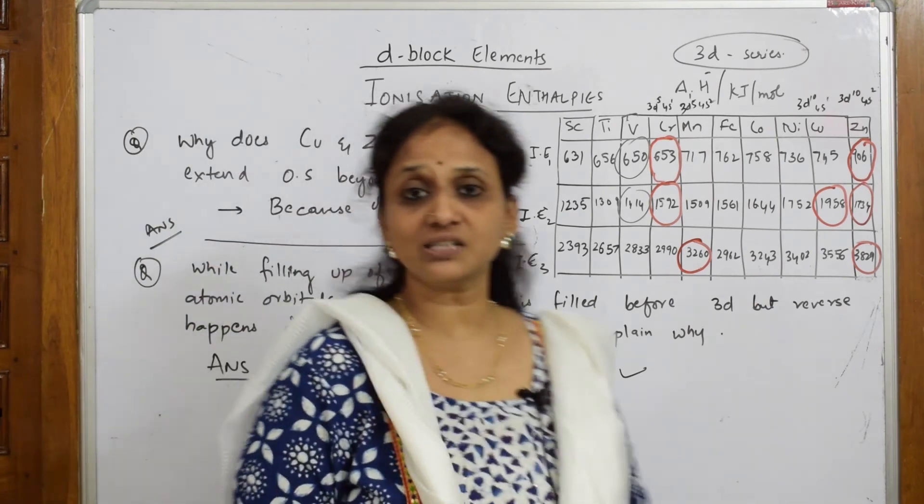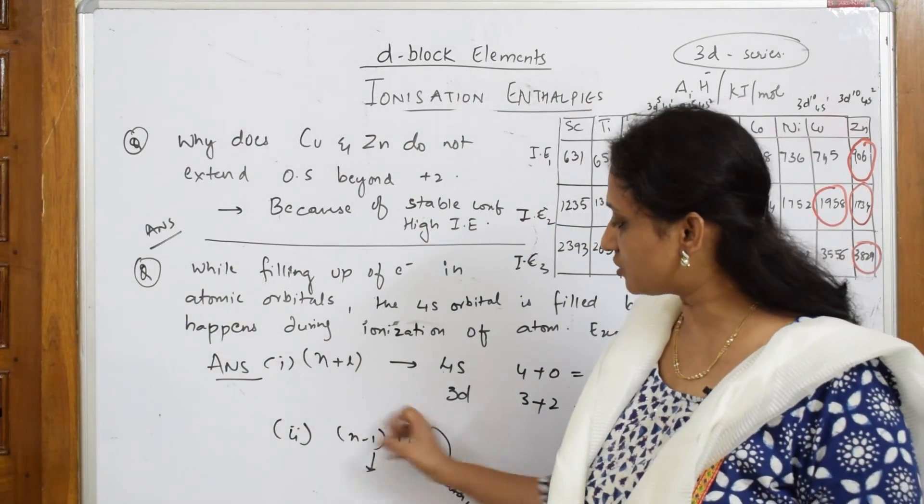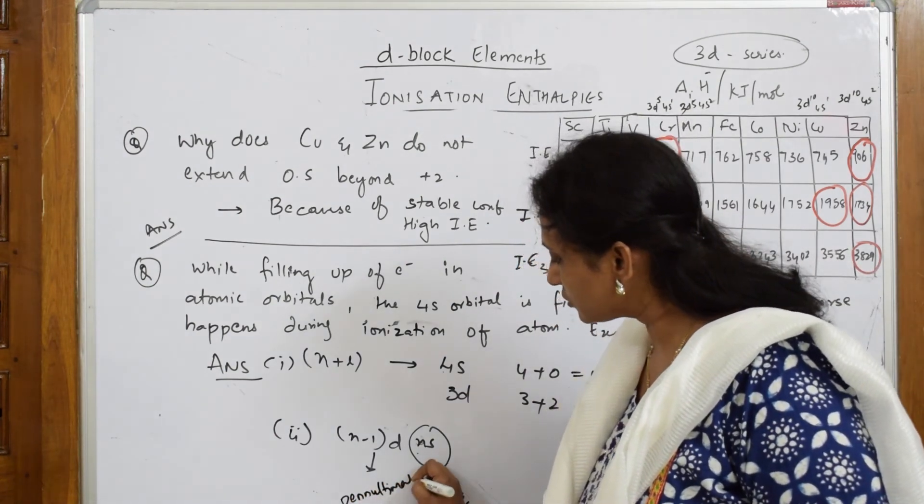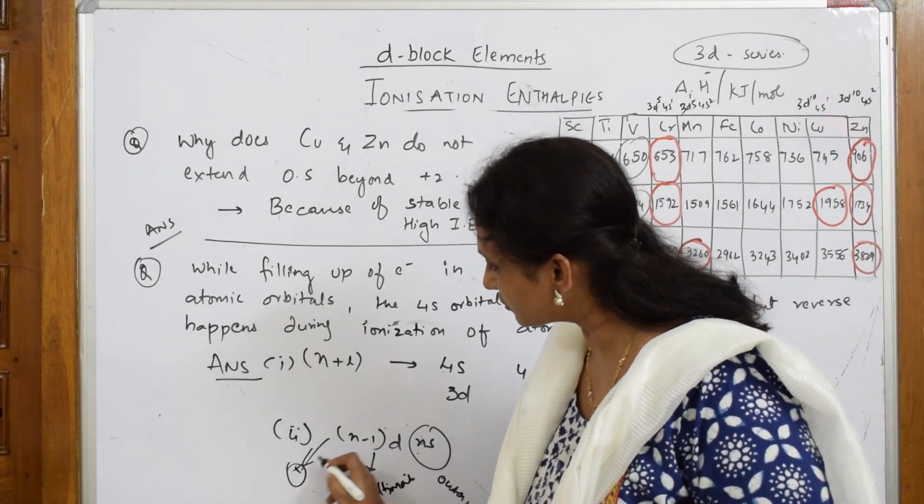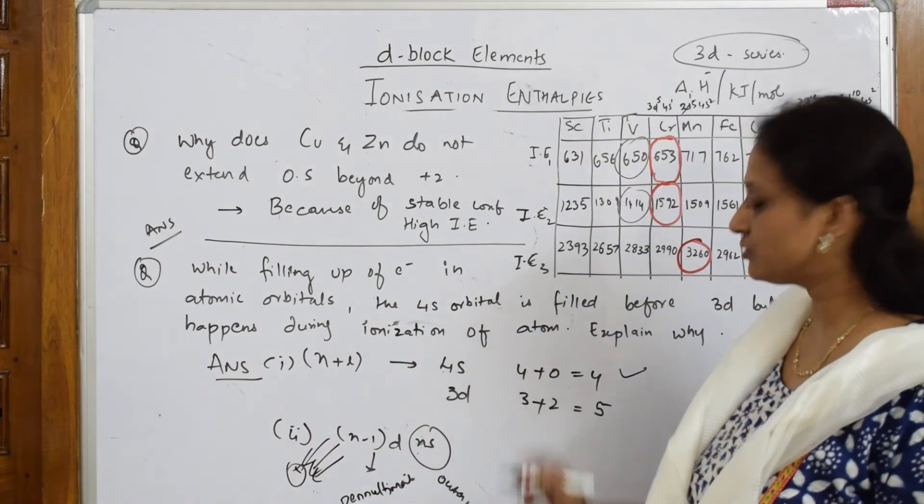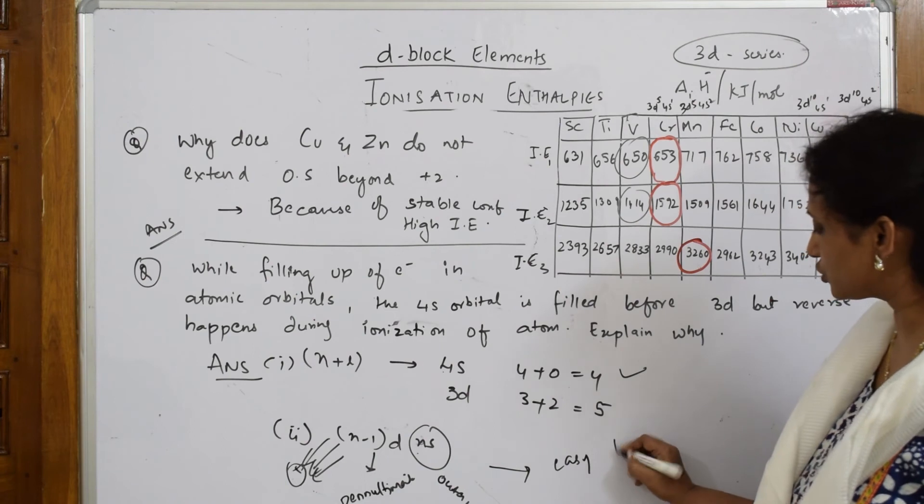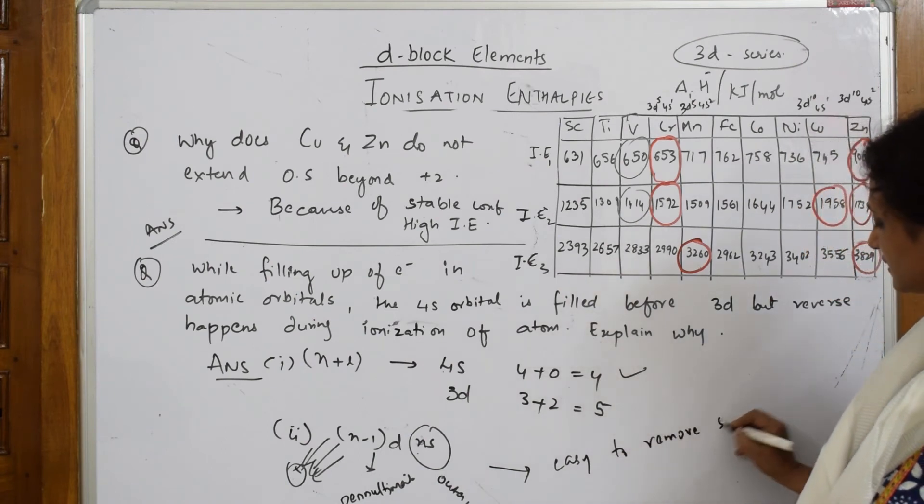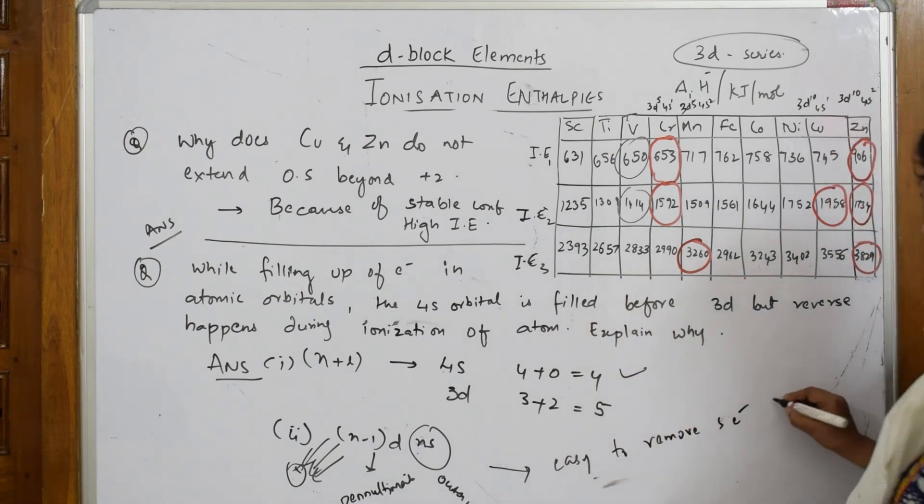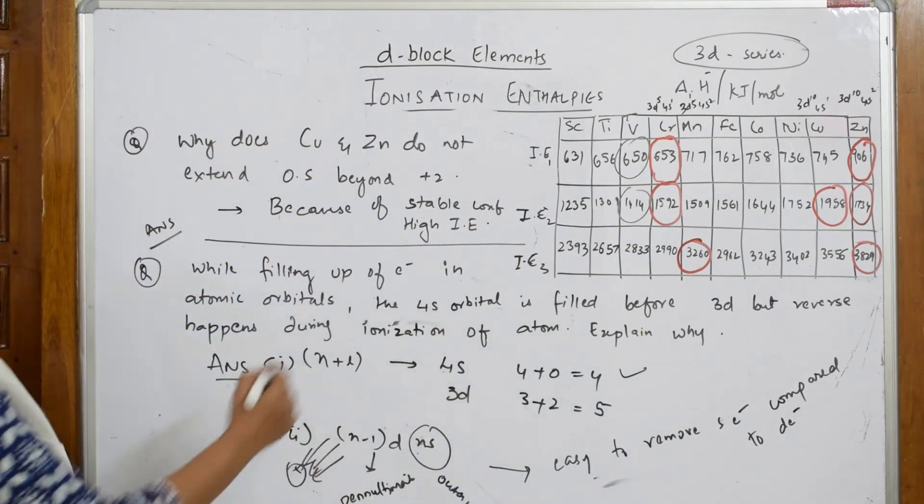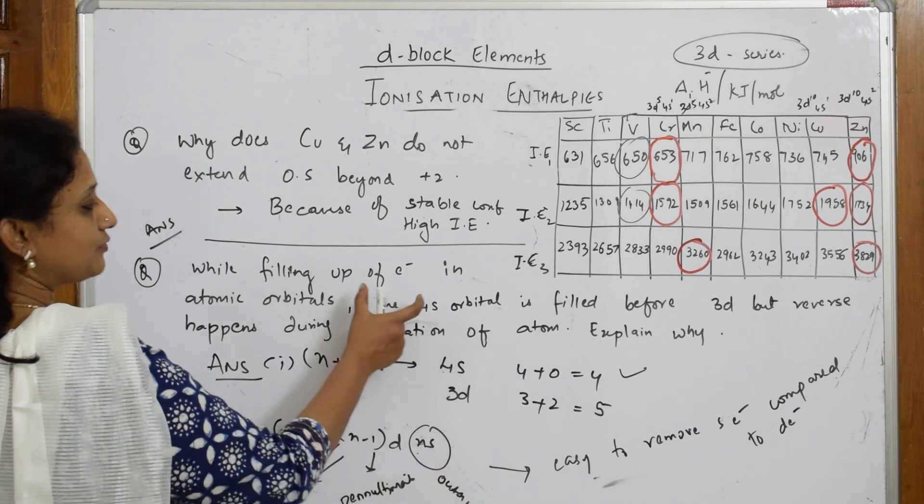Why? Because the electron attraction or the nuclear attraction keeps on dragging the electron. This is your penultimate shell, that is your inner shell. The nucleus tries to drag the electrons from here - the nuclear attraction will be more. So what should you write as a second reason? When removing an electron, it is easy to remove s electron compared to d because it is in the penultimate shell closer to the nucleus. Because of these two reasons, first is this reason, second is this reason, that is why we follow this concept.